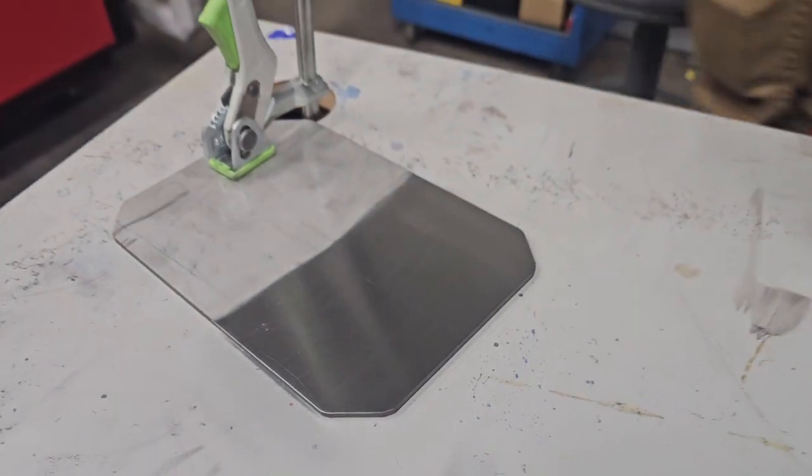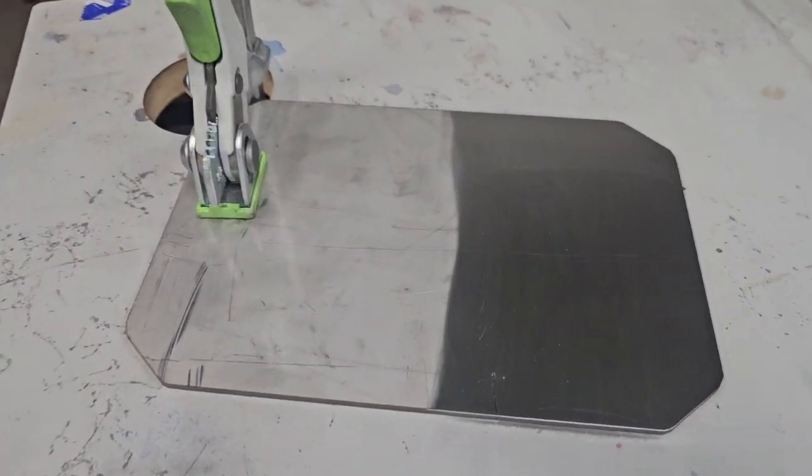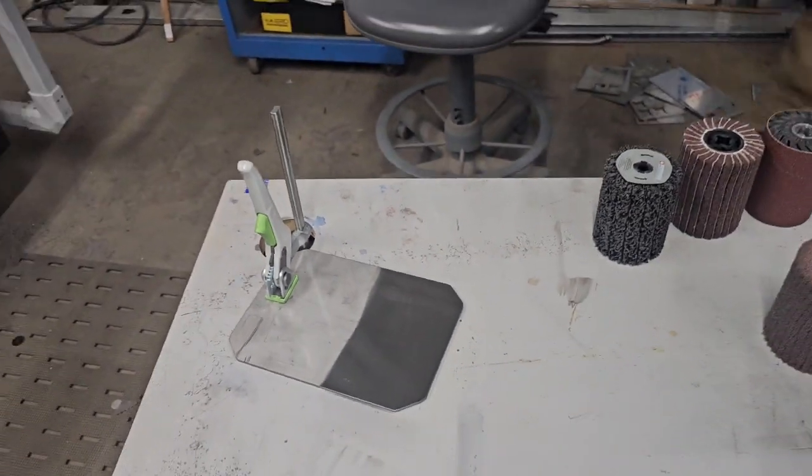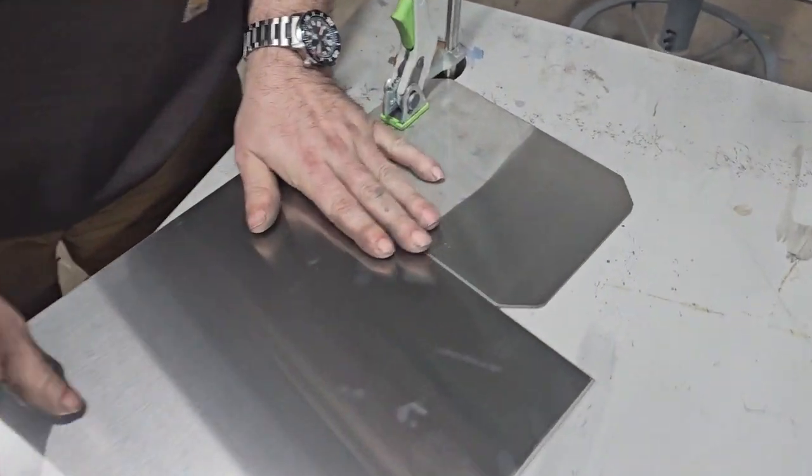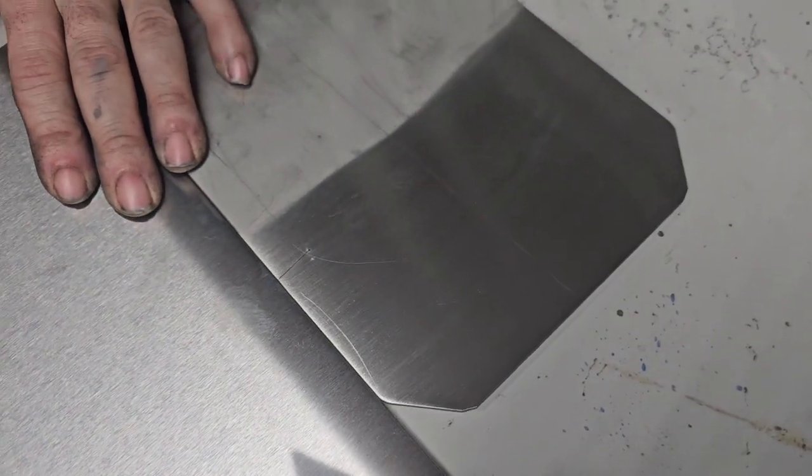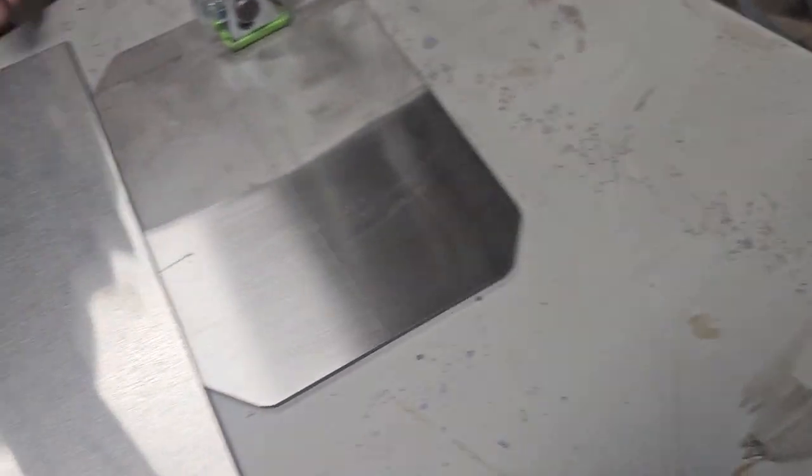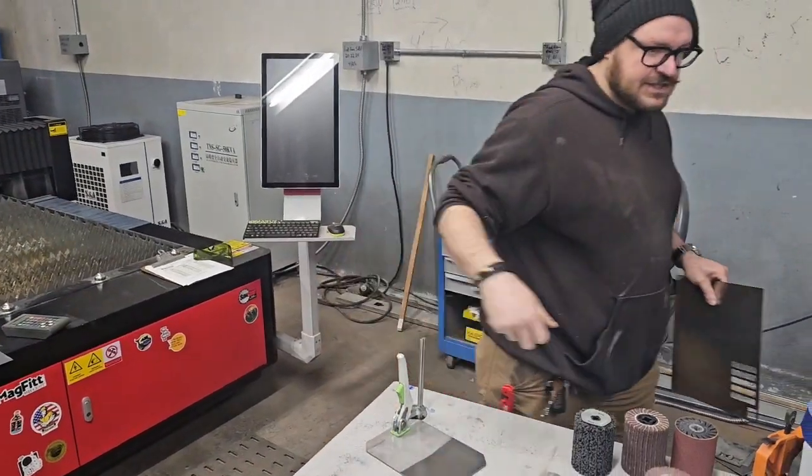And let me just grab an example of what number four brush looks like coming out of the factory. Of course they put a protective coating on it, but it's almost similar. And that's how you do a number four brush finish on stainless steel.